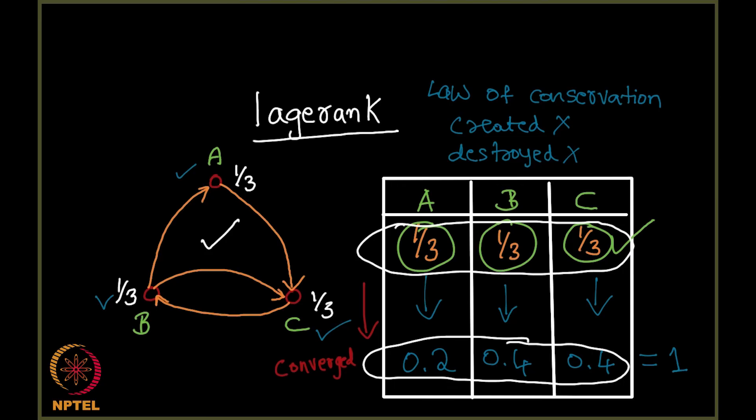How did it converge? I suspect this was a coincidence. It may not happen for all graphs. Will it happen for any random graph? If I assign values to it, will it converge? May not be true. Let us check another graph.